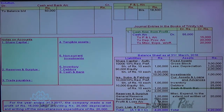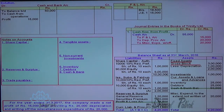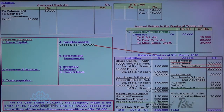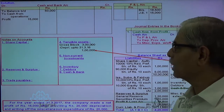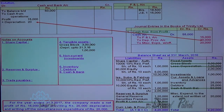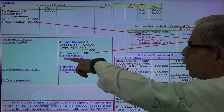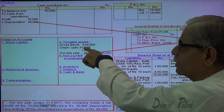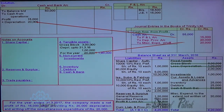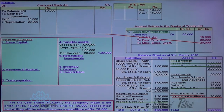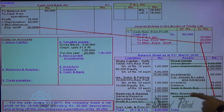Balance of profit and loss account. Fixed assets: 3 lakhs. Already depreciation provided up to 31st March 2016. The additional depreciation — cash account debit, depreciation is a non-cash cost, so 20,000. Therefore, 3 lakhs minus 1 lakh 20,000 = 1 lakh 80,000 will be the asset value at the end of the year. Miscellaneous expenses written off — cash account debit, this is written off so it will be cancelled from the balance sheet.